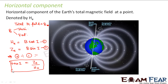So these three elements — magnetic declination, magnetic dip, and horizontal component of earth's magnetic field — when taken together will completely define the direction as well as magnitude of the total magnetic field of the earth at any point. At any point, if you know the declination, inclination, and horizontal component, you can perfectly define the total magnetic field of the earth.